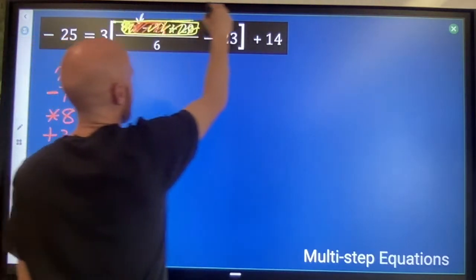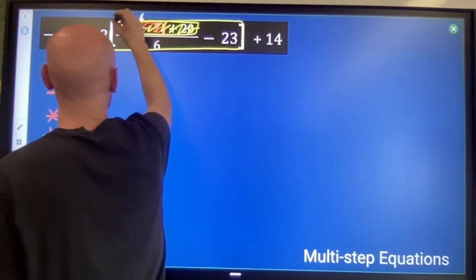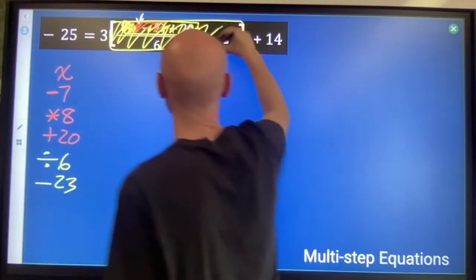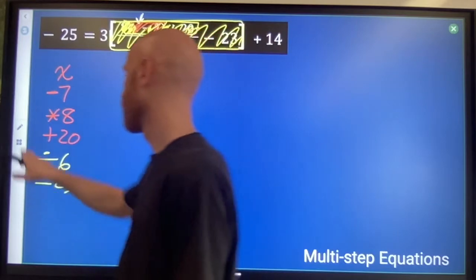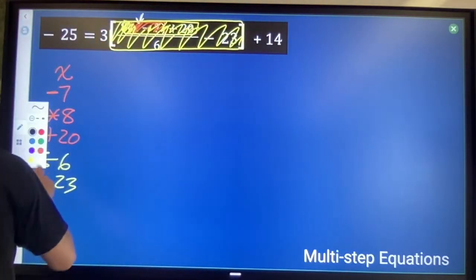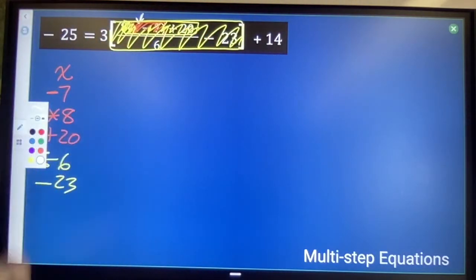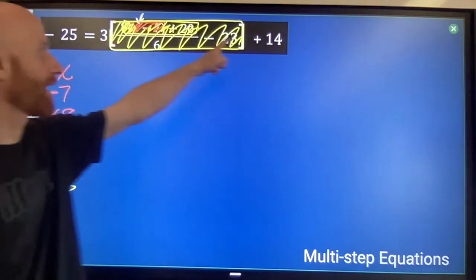Now, I've got a big block. And what happens to this block? Two more operations: times 3 and then plus 14.